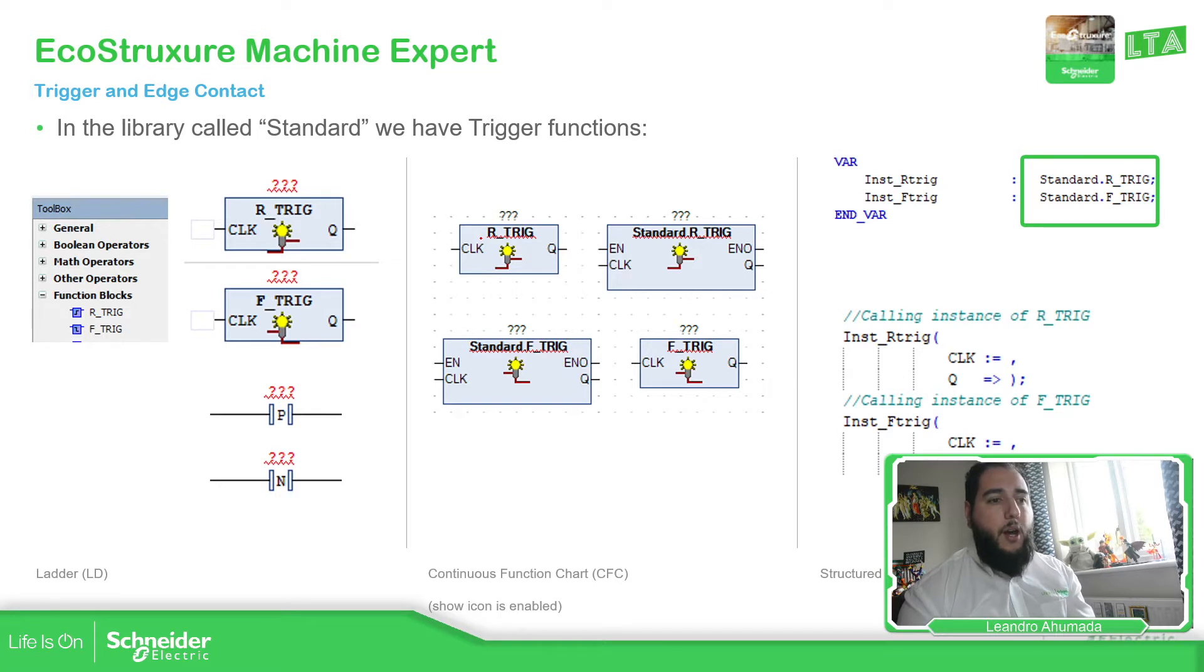The name of the function block is started by R or F. If it's R for rise and the other one for fallen. So if we need to see a rise edge when we have a condition on a variable that goes from 0 to 1, then we need to use the R_TRIG. And if we have a variable that goes from 1 to 0 and we want to detect this change of the variable, we need to use the F_TRIG in that case. As you can see over here, you notice that above the function blocks, we have some question marks. This question marks indicates that that particular block requires an instance.